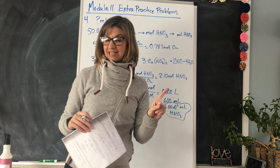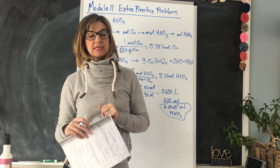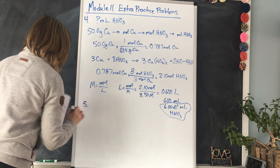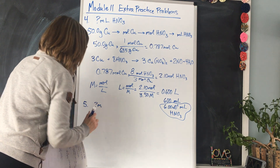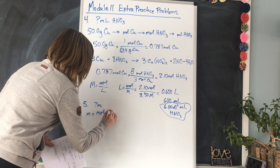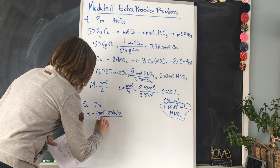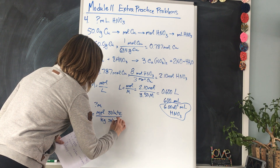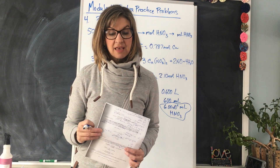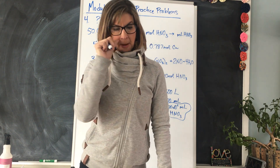Moving on to number 5: what is the molality — not molarity, molality — of a solution in which 50 grams of magnesium nitrate are dissolved in 500 grams of water? Molality (m) equals moles of the solute divided by kilograms of the solvent. Our solute is magnesium nitrate, but we need moles, not grams, so we'll have to convert.